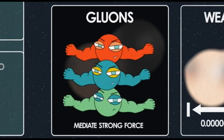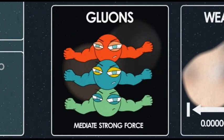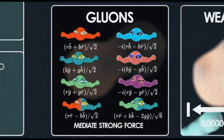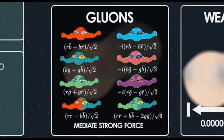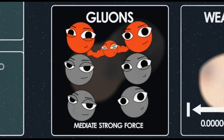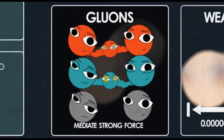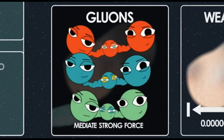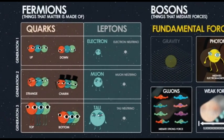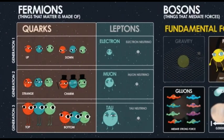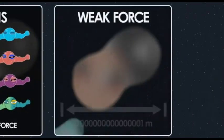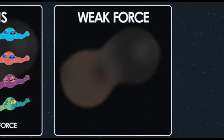The strong force has a property called color, with three colors: red, blue, and green. Because of this, there are actually eight gluon particles carrying the force. There are red, blue, and green versions of every kind of quark, so there aren't six quarks — there are actually 18.